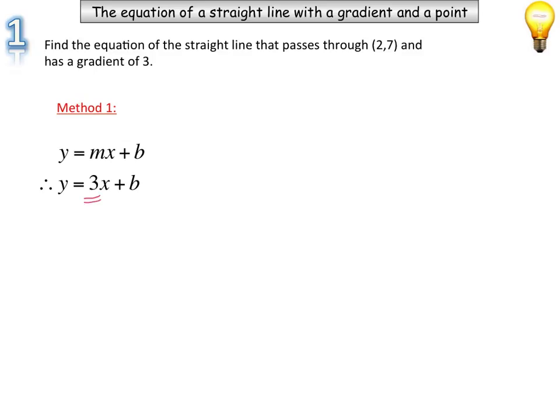So I know that because that's the gradient, it's going to be y equals 3x plus b. Now I'm going to substitute this point into my equation and try and find out what b is. So y equals 3x plus b, 2 times 3 is 6, take 6 away to the other side, and I have b equals 1.